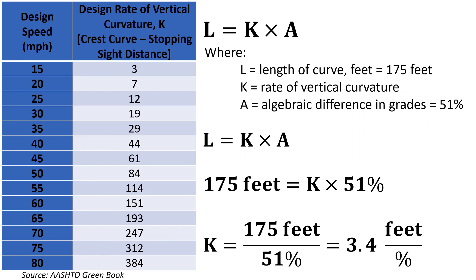Another value you can look at if we think about that length of vertical curve 175 feet that we measured, that's somewhere in the 60 to 65 mile per hour design speed range. Those values of K are consistent with a value between 151 and 193 for K, that's the design rate of vertical curvature.